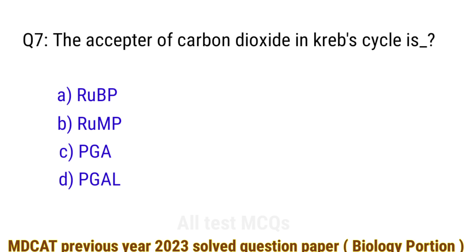Question number 7. The acceptor of carbon dioxide in the Krebs cycle is? The right answer is option A: OAA (oxaloacetate).